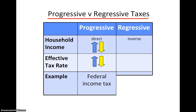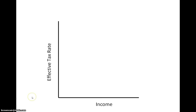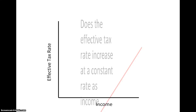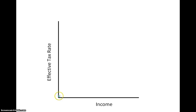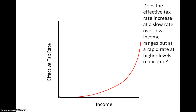The federal income tax is frequently given as an example of a progressive tax, although I will qualify that by adding that the federal income tax is only marginally progressive. What do I mean by that? Does the effective tax rate increase at a constant rate as income increases? Or does the effective income tax rate increase at a slow rate over low income ranges, but at a rapid rate over higher levels of income?